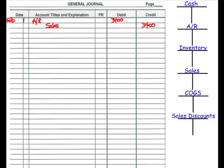Every time we make a sale of inventory, we also have to record that adjustment to the inventory account. We have to record the transfer of that inventory to cost of goods sold. So we also have to debit cost of goods sold and credit inventory. The amount that we take out of the inventory account is the amount that we paid for the inventory that we're selling, and it tells us in the question that the cost of the inventory is $2,700.